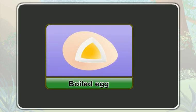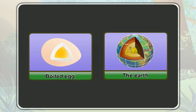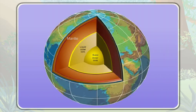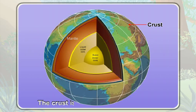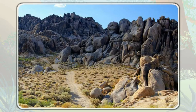Like a boiled egg, our earth also has different layers. Similar to the egg shell, our earth has a thin, hard outer layer. This layer of earth is known as the crust. The crust is the layer on which we live. The crust of our earth is made up of hard material. The hard material is known as rocks.